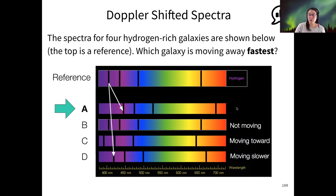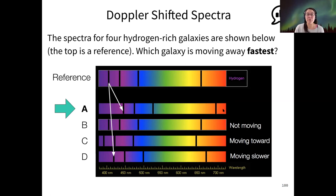There's an equation that governs exactly how much the shift is, and we can get the speed out of that equation. So what we're going to do now is an activity to measure the speed of Andromeda.